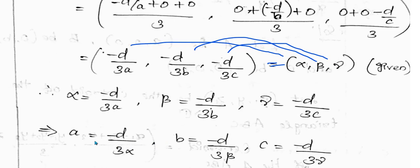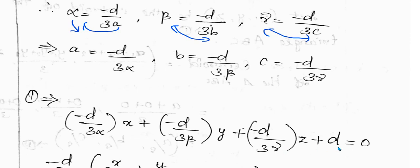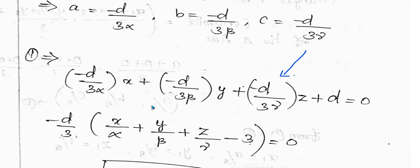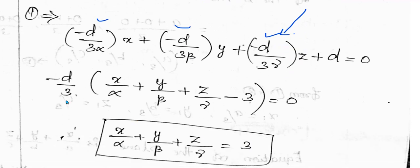From these: a = -d/(3α), b = -d/(3β), c = -d/(3γ). Substituting back into the general plane equation and dividing through by d, we can cancel the two sides and simplify.